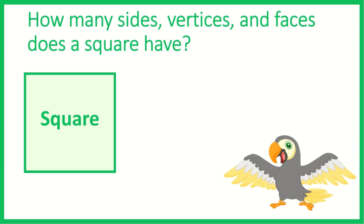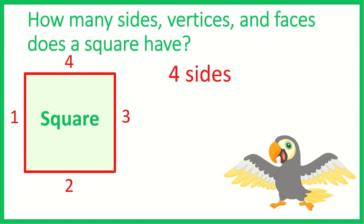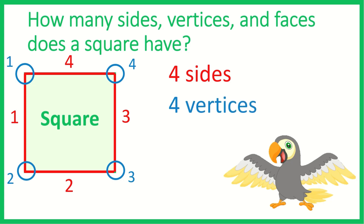How many sides, vertices, and faces does a square have? Let's count the sides together. One, two, three, four. A square has four sides. Let's count the vertices. One, two, three, four. A square has four vertices.